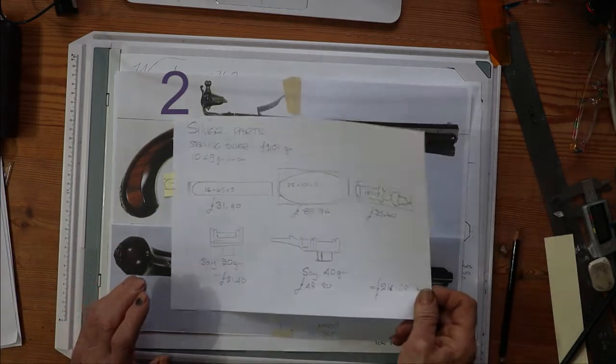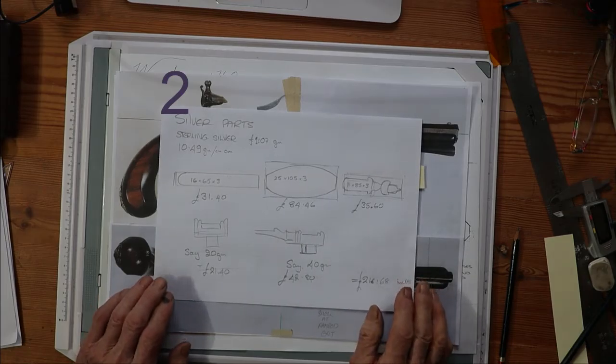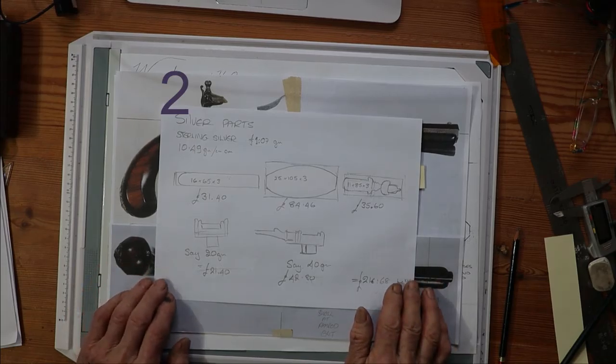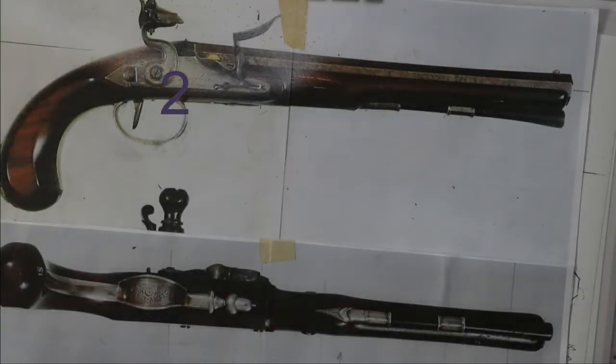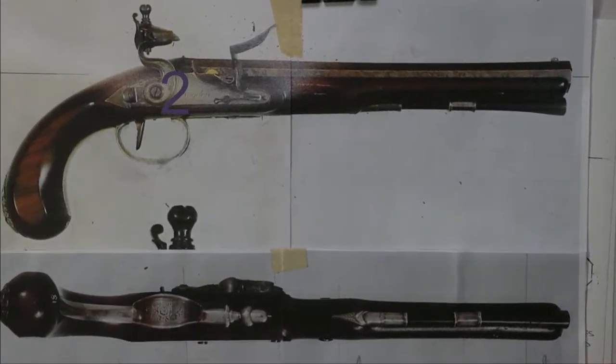So now I can set that aside until I'm actually ready to start making those. And then we can get on with some more things. So I think what I'm going to do next, having done that, I should quietly go and do a bit of engraving at some point, because I'm going to need to embed that practice. But we've had a look at the trigger guard and the silver I'll need to get from Cooks and Gold.